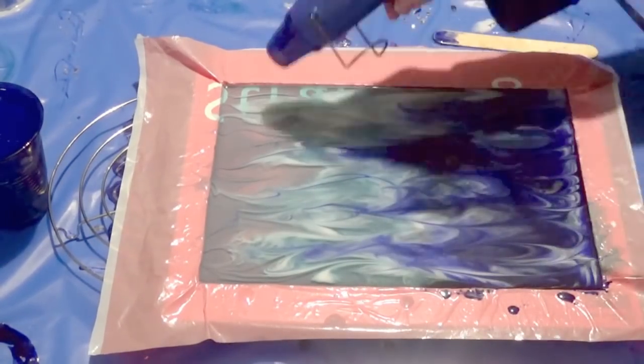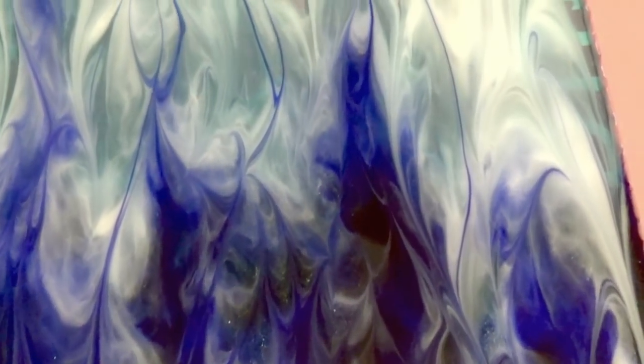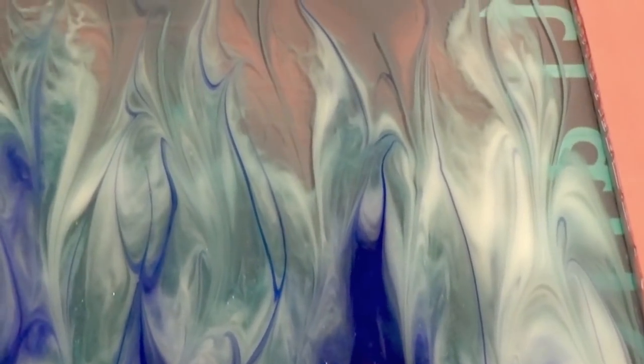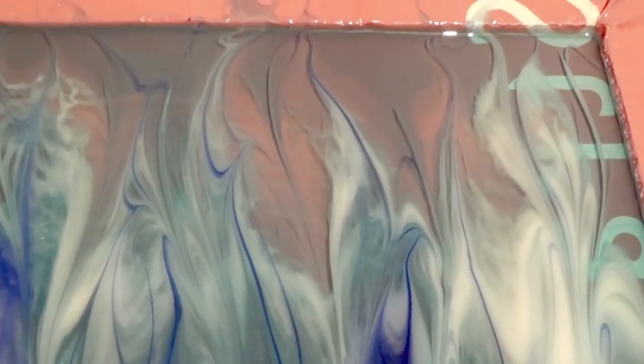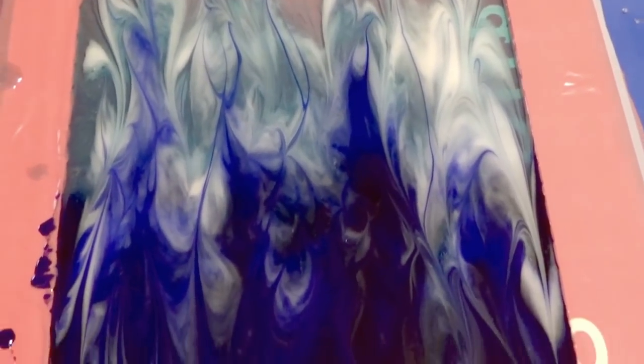Once again we just give it a quick zap with the heat gun. Now here's a close up of how that's looking so as you can see pulling the resin through with the stick gives a real nice flame effect and although this is supposed to look like water I actually wanted it to have that feel as well so I'm quite happy with how this is looking so far.